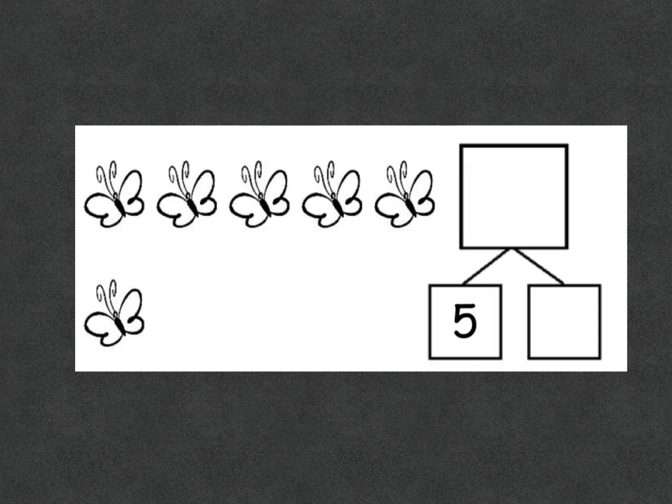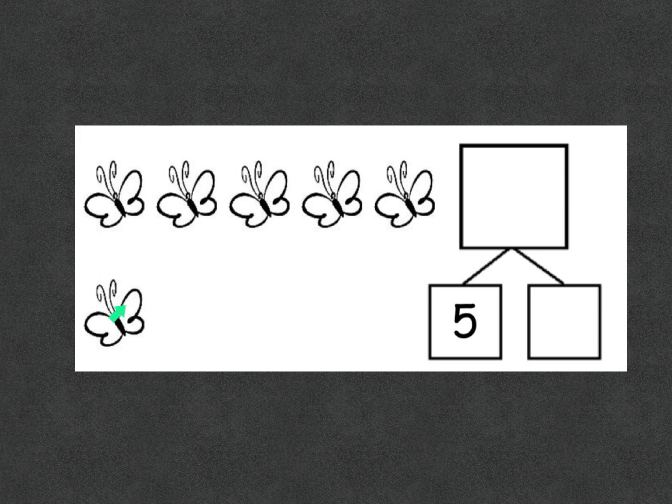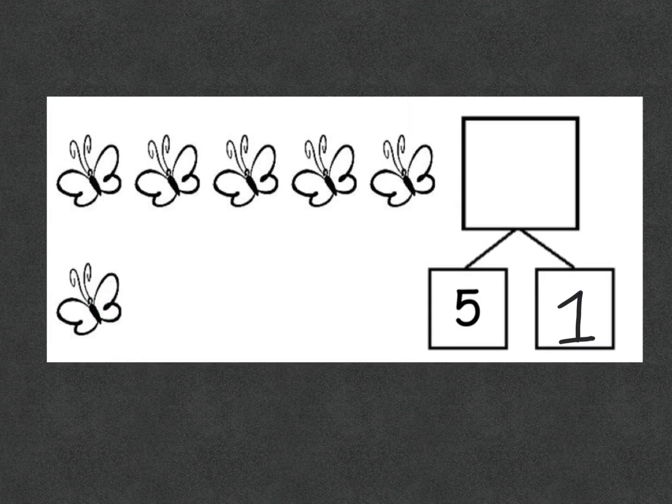Let's start with this example. We have five butterflies on top and one butterfly on bottom. When you count these butterflies out, we have one butterfly, two butterflies, three butterflies, four butterflies, five butterflies, plus one more butterfly, six butterflies.